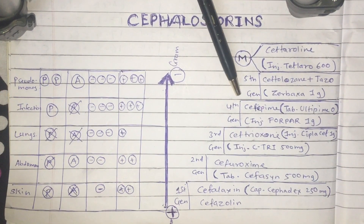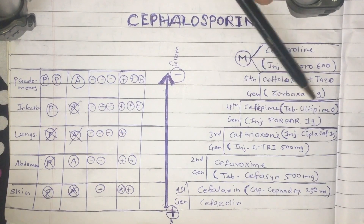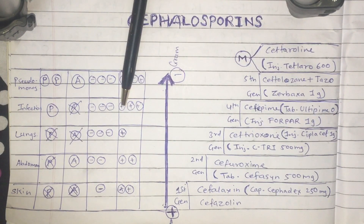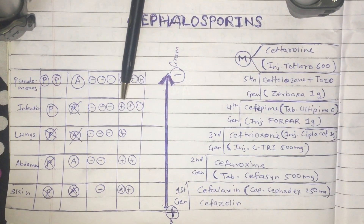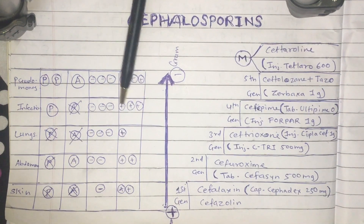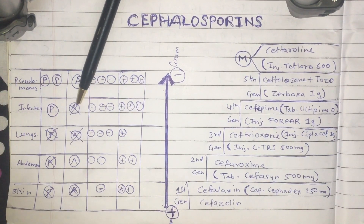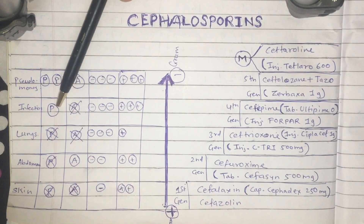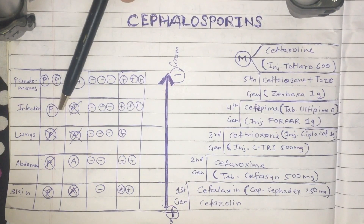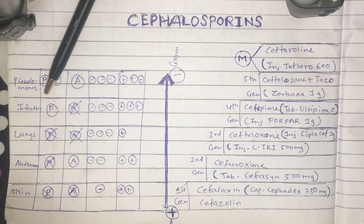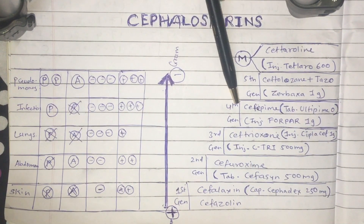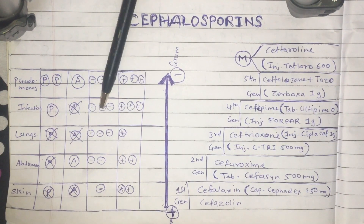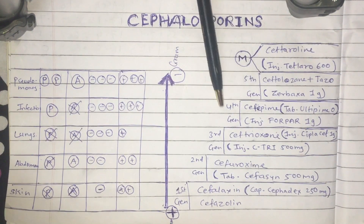For fourth generation cephalosporins, we have Cefepime, available as tablet Ultipime-O or injection 1 gram. Fourth generation cephalosporins have very good coverage of both gram-positive and gram-negative microorganisms, but do not have activity against anaerobic organisms. They are highly active against Pseudomonas — so if a culture sensitivity report shows Pseudomonas, fourth generation cephalosporins can be used. They are also suitable for serious infections requiring broad gram-positive and gram-negative coverage.